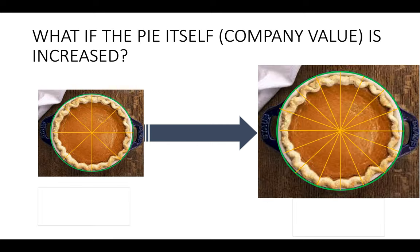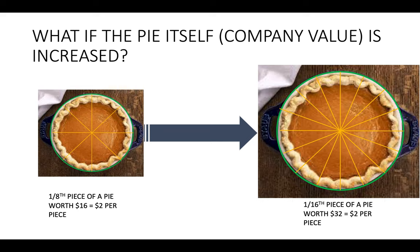But what happens if the value of the company actually increases? What if the size of the pie itself grows? On the left, we've got a pie cut in eight pieces worth $16 — one piece is worth $2. On the right, the pie is worth $32. Those are thinner slices — it's 1/16th you own now — but it's of a bigger pie, and a piece is still worth $2. So there's been dilution, but you haven't lost value in your share. The company itself has gotten bigger.